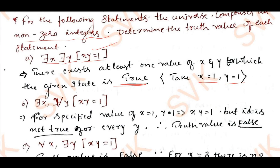Second: there exist x, for all y, such that xy = 1. This is false. While we can choose x = 1, it is not true for all values of y — for example, x = 1 and y = 2 gives 1 × 2 = 2, not 1. Therefore the given statement is false.